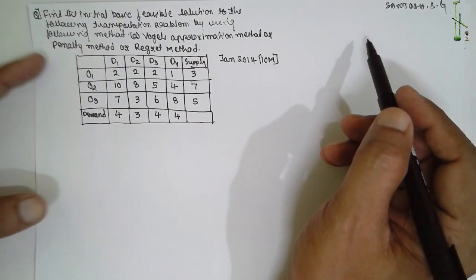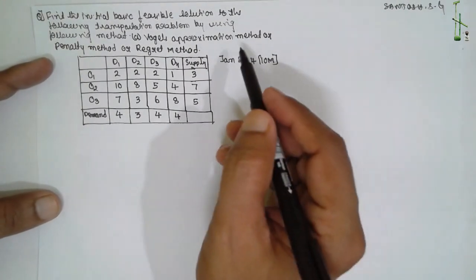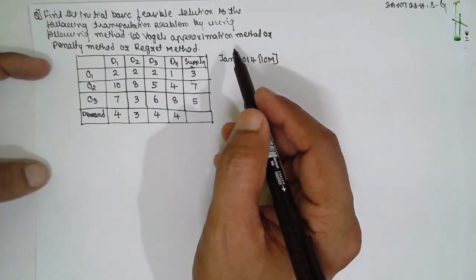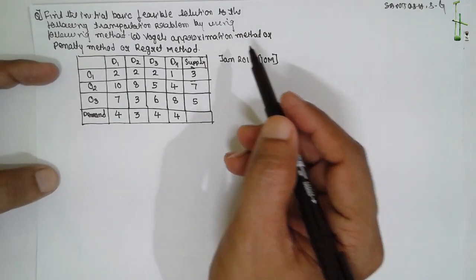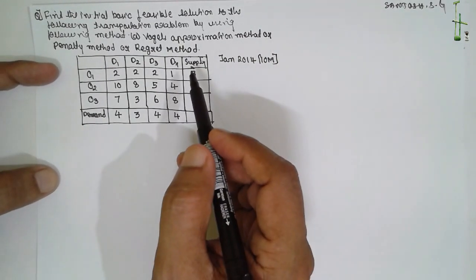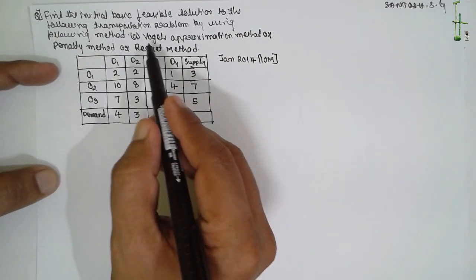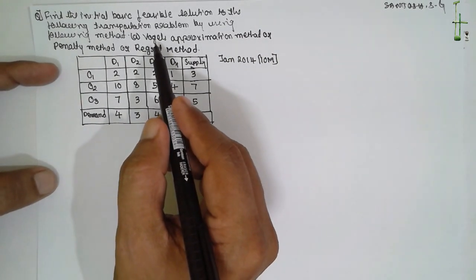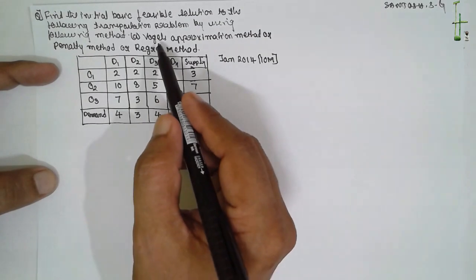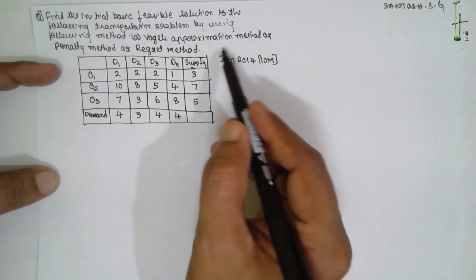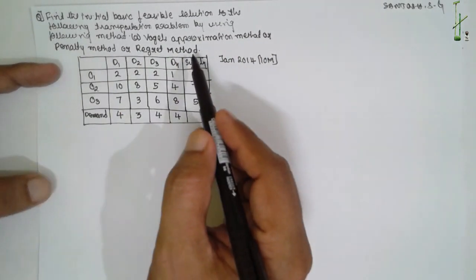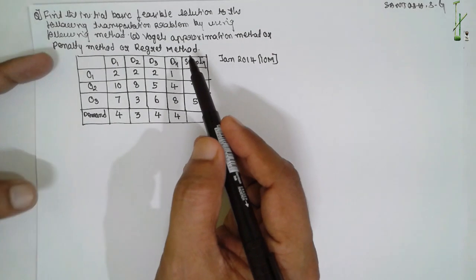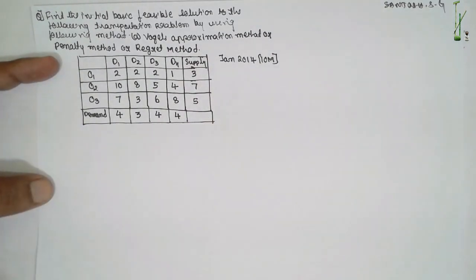I am Sundush Gazanka. Today I am teaching you Operations Research — specifically the transportation problem. In that, I am going to focus on Vogel's Approximate Method, also called the penalty method or regret method. This is the problem.